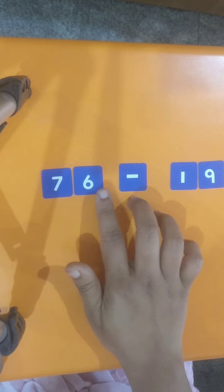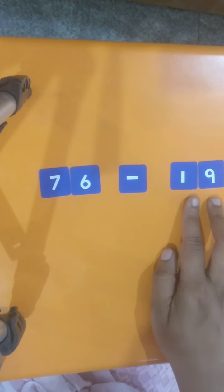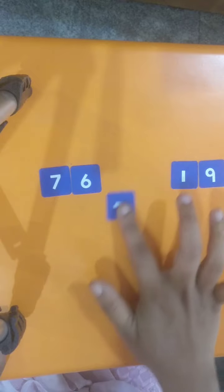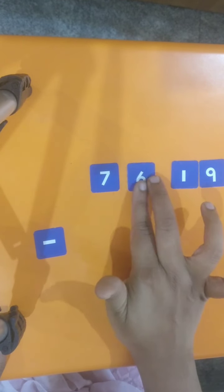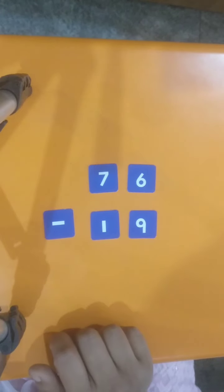Today, we will be learning subtraction of two digits with carryover or with borrowing. They also call it regrouping. So, you know here we have number 76 minus 19. This is horizontal subtraction. How will you write it in vertical? One below the other. Let's write this in vertical form.